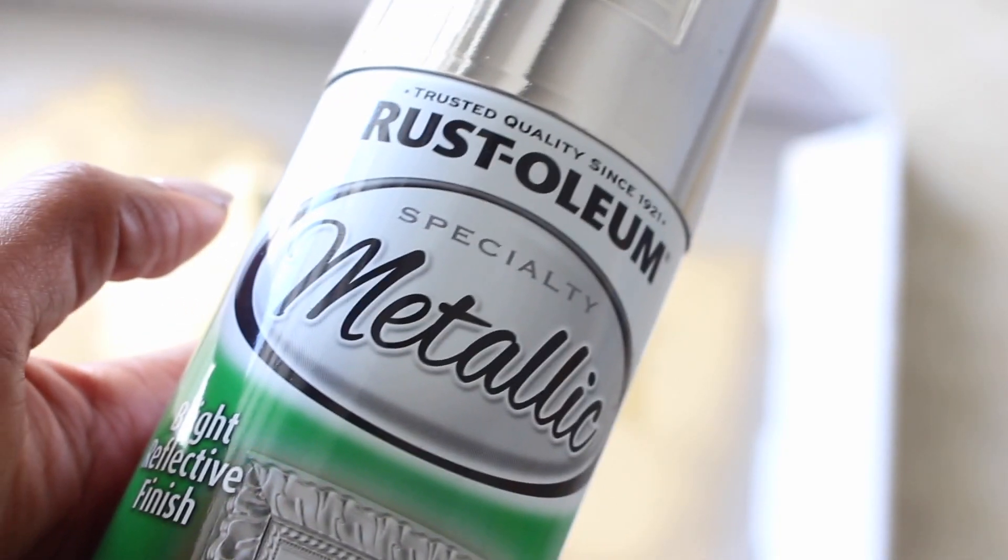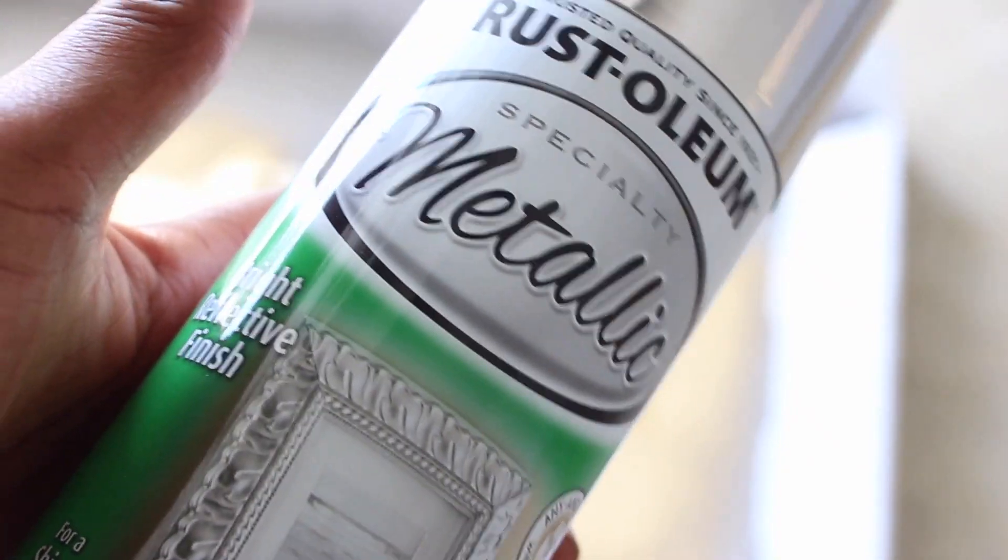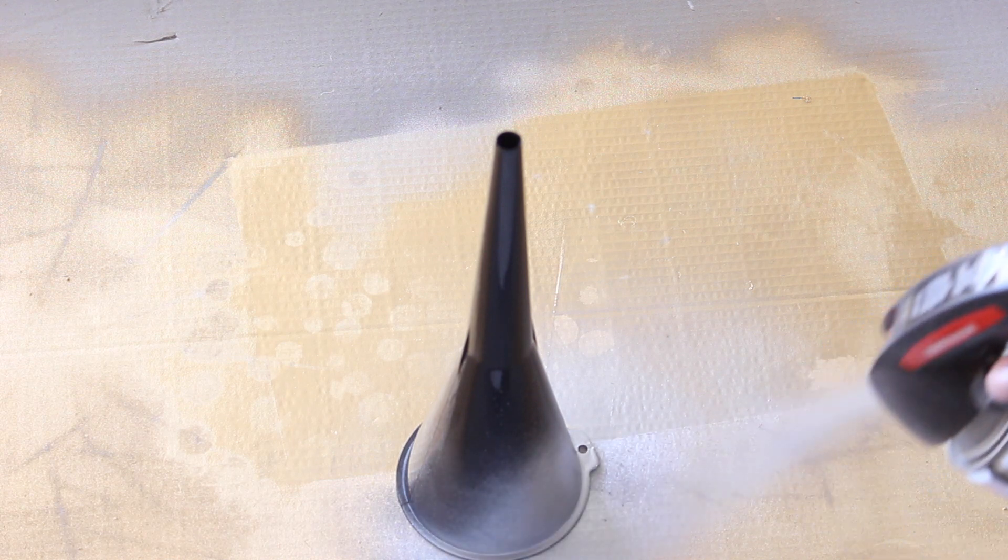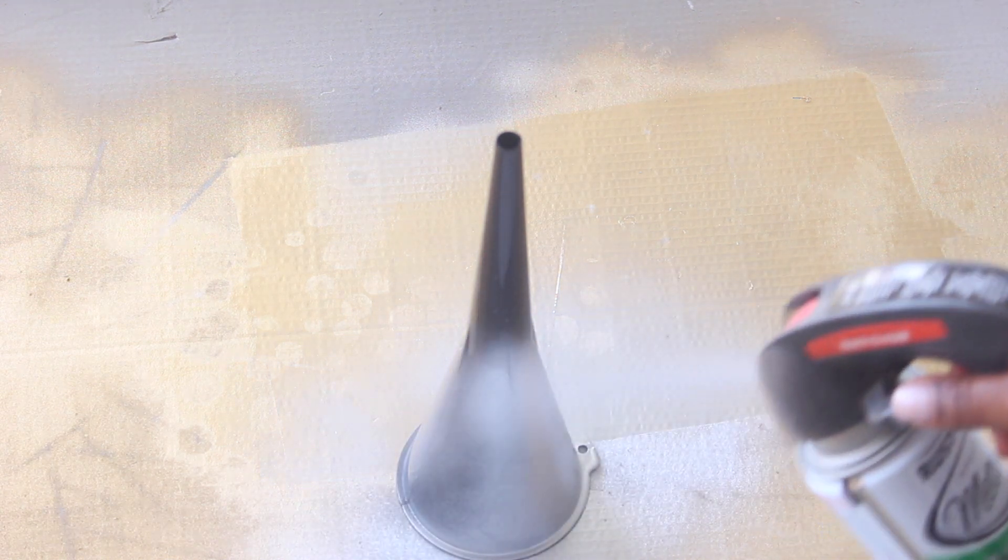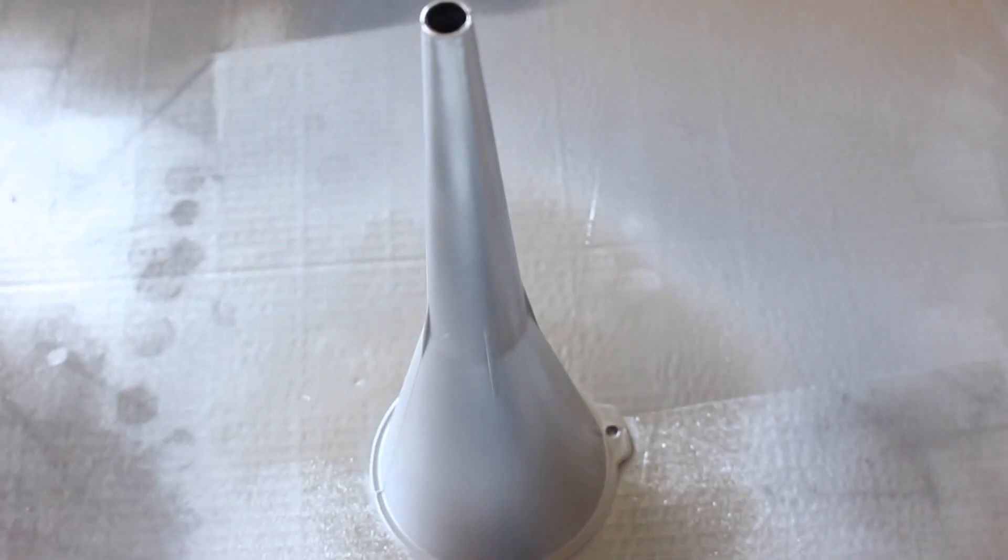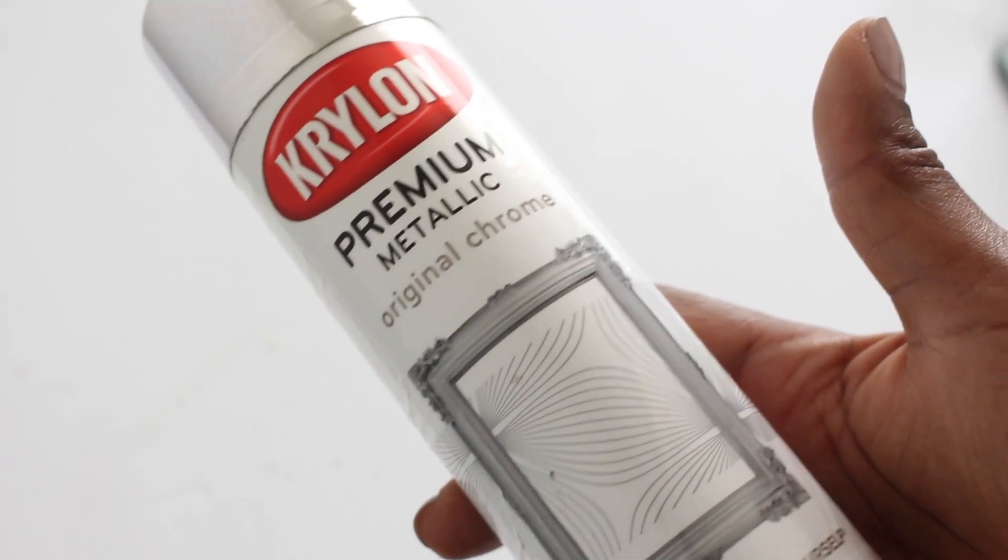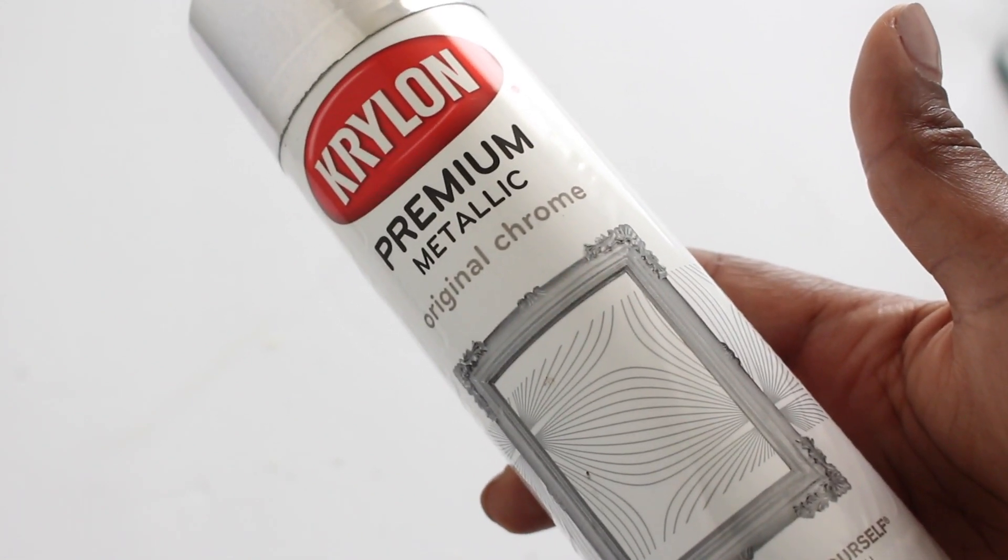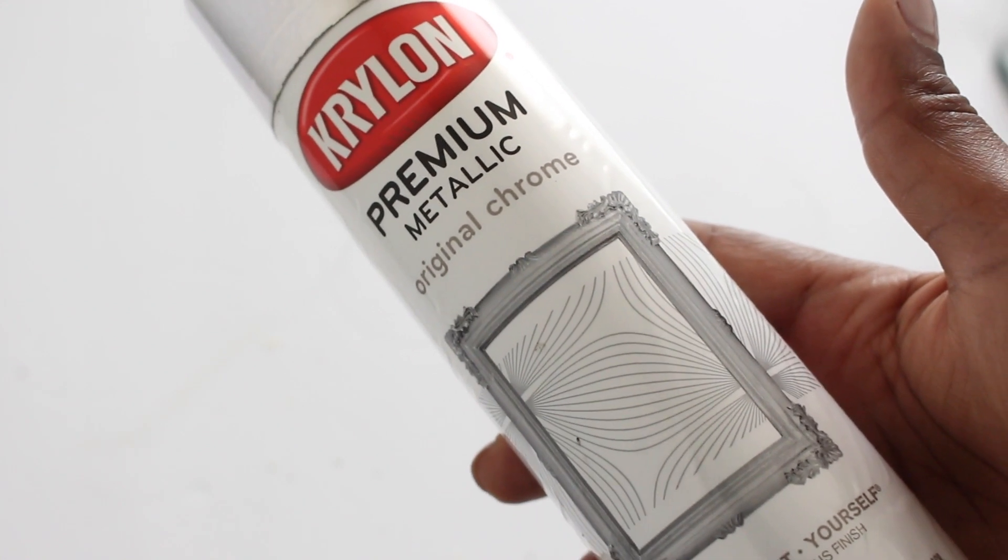I'm going to spray paint the funnel with this Rust-Oleum silver metallic spray paint. I changed my mind and decided to go with the Krylon premium metallic original chrome spray paint. I do like the Rust-Oleum metallic spray paint but it was not quite as reflective as I thought it would be, so the original chrome did the trick for me.